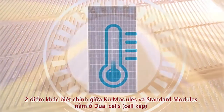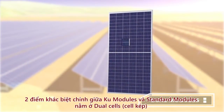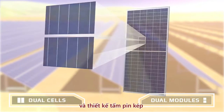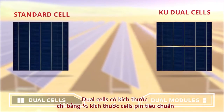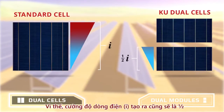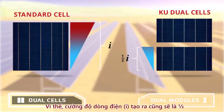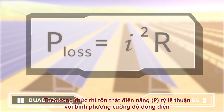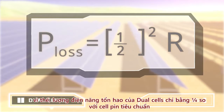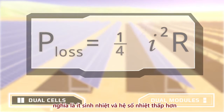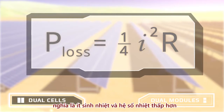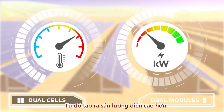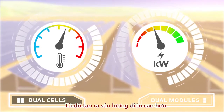The main differences between KOO modules and standard PV modules are dual cells and dual module design. Dual cells are half the width of standard cells. Cells with half the width generate half the current. Because the power loss goes as the square of the current, dual cells generate only one quarter of the power loss, which means less heat generated. Because the module operates cooler and has a better temperature coefficient, it can generate a higher power output.